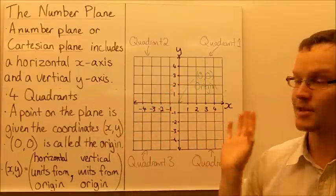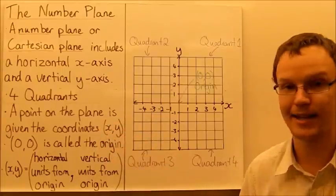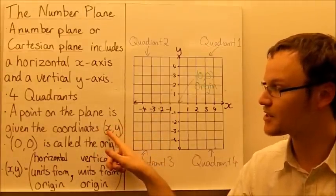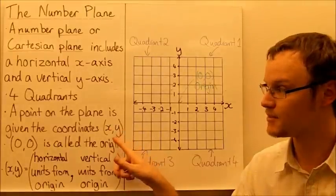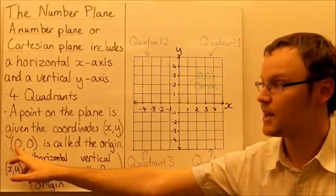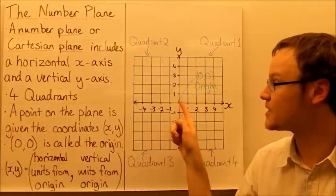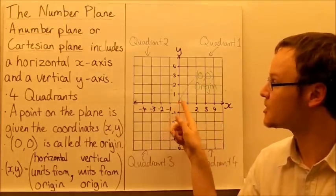A point on the plane is given some coordinates, x, y, and they're in brackets like that in parentheses. So the x-coordinate always comes first, and the y-coordinate comes second. (0,0) is called the origin. So if it's got the coordinates x is 0, y is 0, it's the origin, it's right in the center of the number plane.